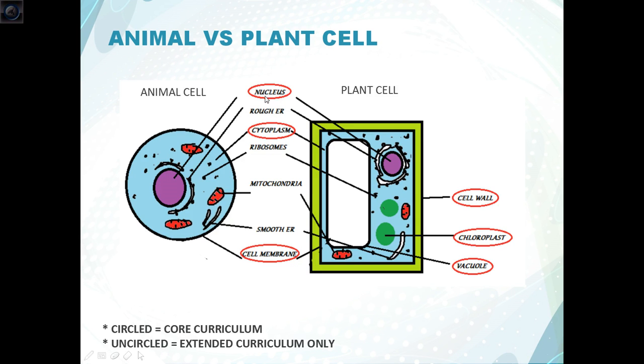So starting with the nucleus, this is found in the cytoplasm and it's a circular structure that contains DNA in the form of chromosomes. It's basically the control center which controls cell division, cell development and cell activities.